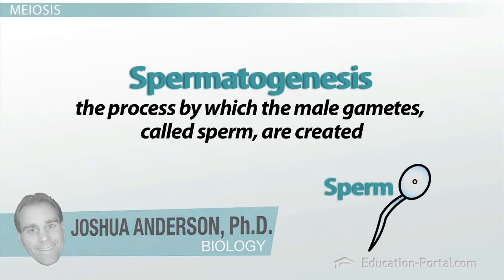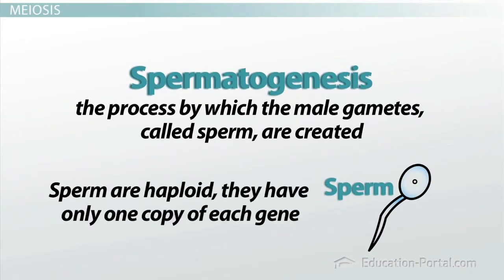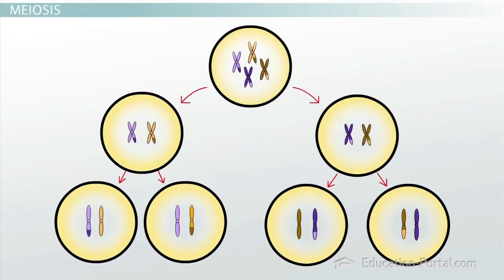Now you may recall that in order to create sperm that can combine with a female gamete, each sperm must be haploid and contain only one copy of each chromosome. You may also remember that in order to create haploid gametes, a cell must go through the process of meiosis, which involves replicating its genome and then dividing, not once, but twice.